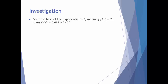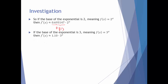Let's summarize. If the base is 2, the f prime of 0 is approximately 0.693147. If the base is 3, the derivative at 0 appears to be approximately 1.10, so the derivative becomes about 1.10 times 3 to the x. These are approximations, so if I'm looking for the base that makes this derivative at 0 equal to 1, it makes sense that it should fall somewhere between 2 and 3.